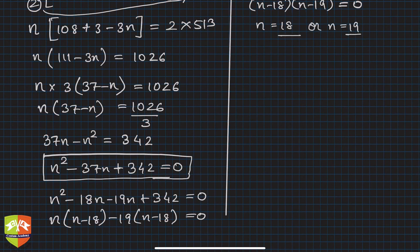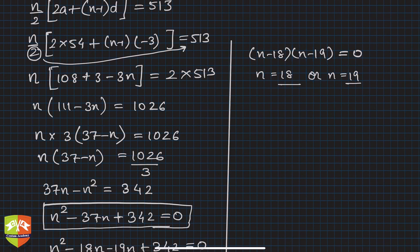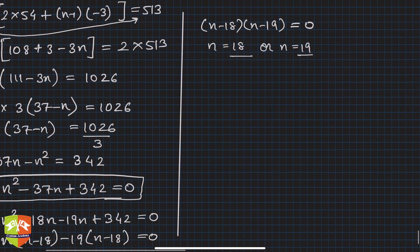That means either n = 18 or n = 19. So we get two values, 18 and 19. They're asking to explain why these two values - meaning sum of first 18 terms is 513 and sum of first 19 terms is also 513. This is happening because there is a negative d.